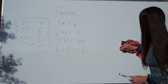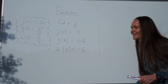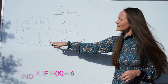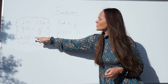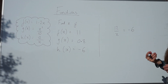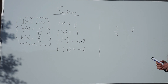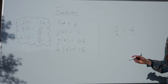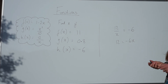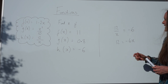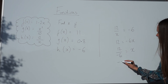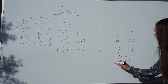Onto h of x. This time we have to put the function h of x equal to negative 6. So the function h of x is 12 over x, and I put that equal to negative 6. To solve the equation, I multiply both sides by x to get 12 equals negative 6x. Then dividing both sides by negative 6 gives x equals negative 2.